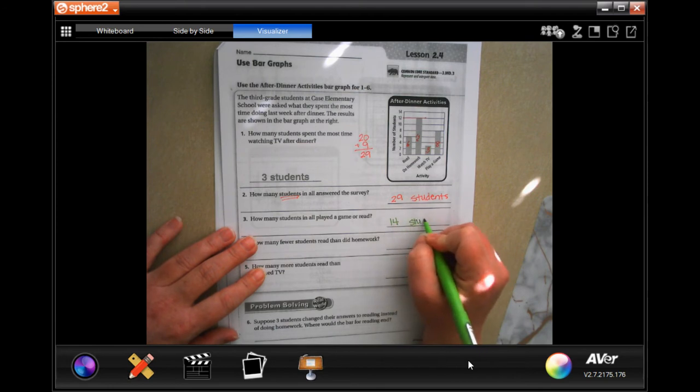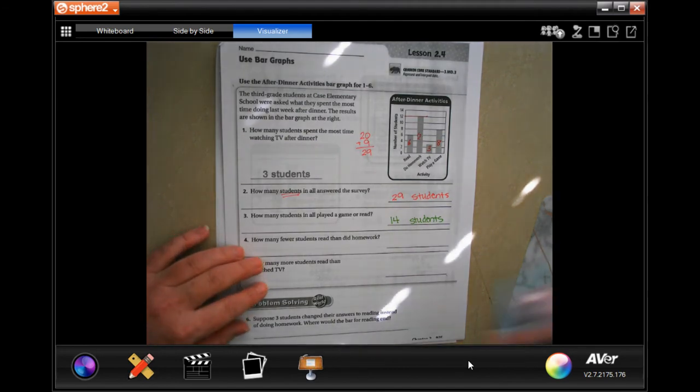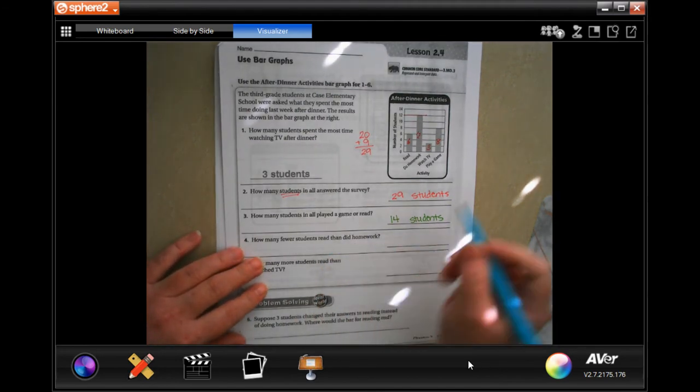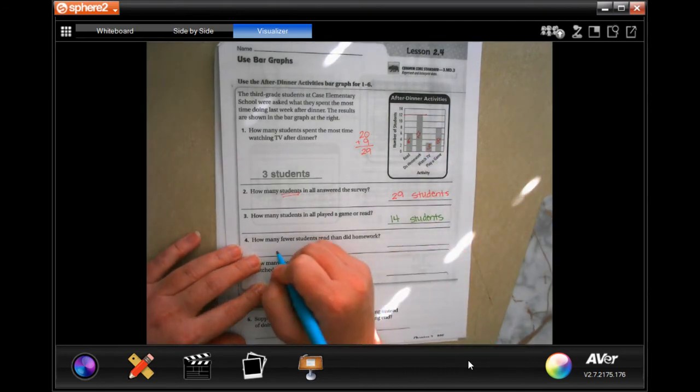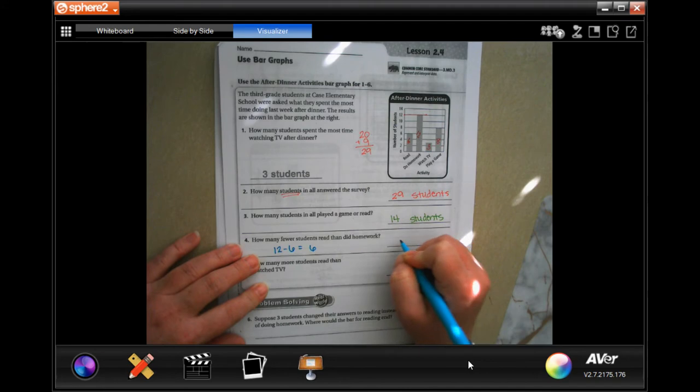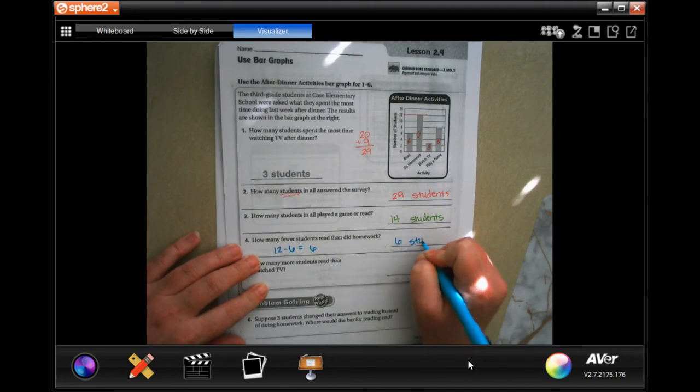How many fewer students read than did homework? Well did homework was 12 and read was six, so 12 minus six is six. Six students.